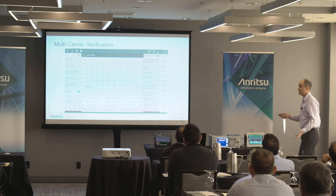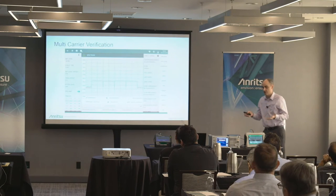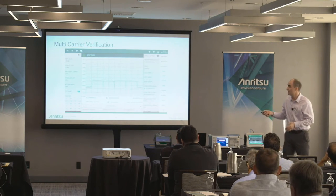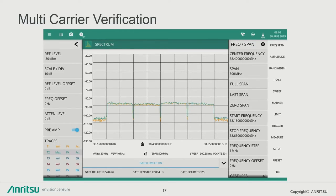Multi-carrier verification: carriers may purchase multiple bands and need to verify all channels are active simultaneously at the correct levels — similar to carrier aggregation in LTE. This ensures there's no fade or anomaly inside any of the beams or signals across all carriers.